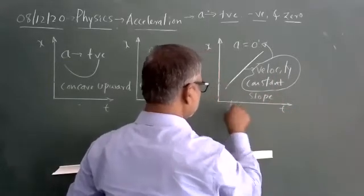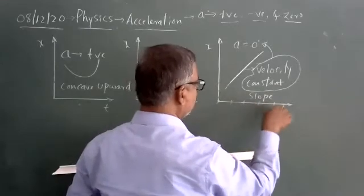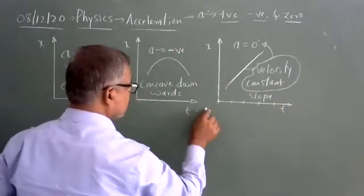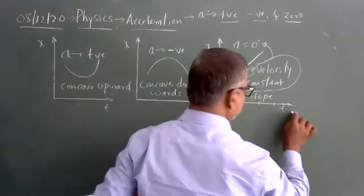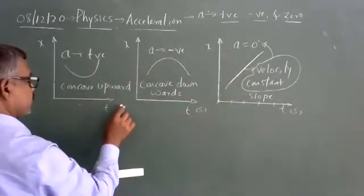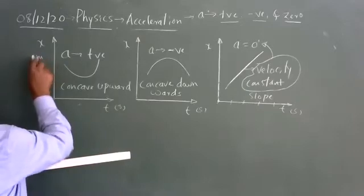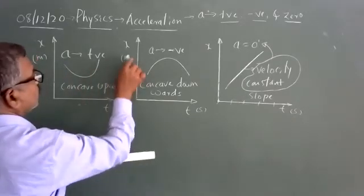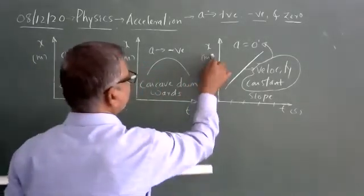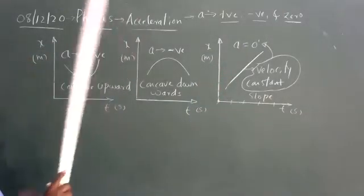The time axis values are 0, 1, 2, 3, 4, measured in seconds — time is measured in seconds for all three graphs. Position is measured in meters. Do remember, I am talking about acceleration.